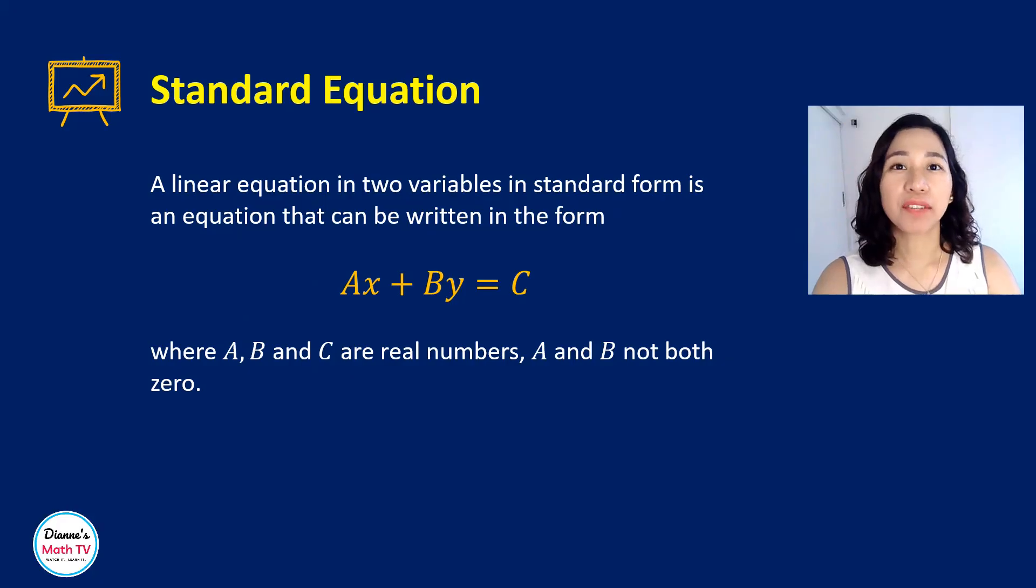Let us first define what we mean by an equation in standard form. A linear equation in two variables in standard form is an equation that can be written in this form: ax plus by equals c, where a, b, and c are real numbers and a and b should not be both zero.